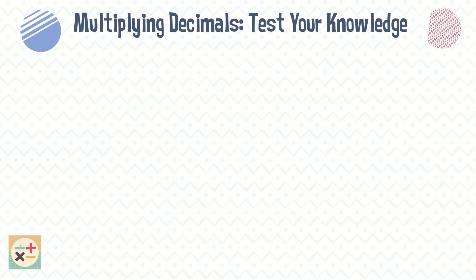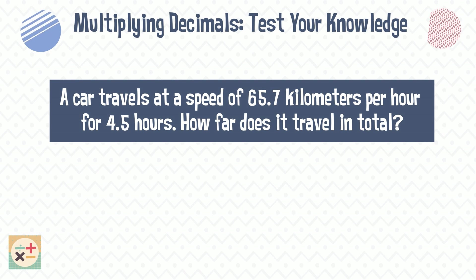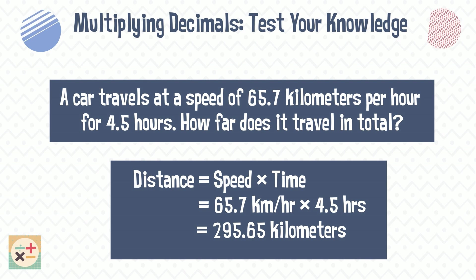Question five: a car travels at a speed of 65.7 kilometers per hour for 4.5 hours — how far does it travel in total? To find the distance, we multiply the speed of the car by the time spent traveling. This gives us an answer of 295.65 kilometers.